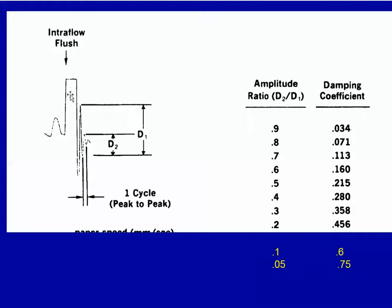Here is an illustration of the tracing. We have pulled the flush device and then let it go, producing a bouncing trace. From the interval between these cycles you can calculate the frequency, and from the reduction in amplitude from spike to spike you can determine the damping coefficient — taking the ratio of the second spike to the first spike gives you the damping coefficient.